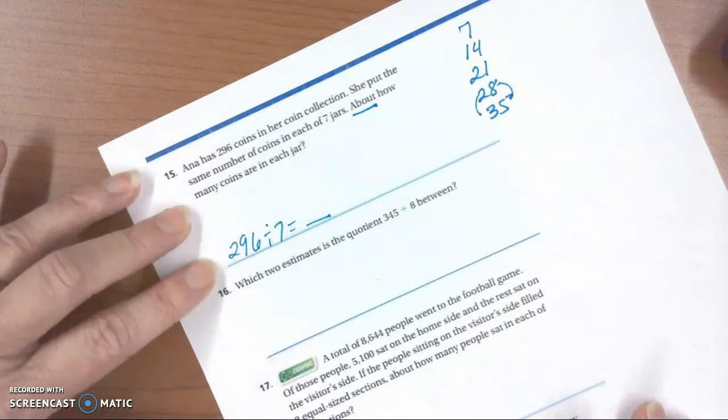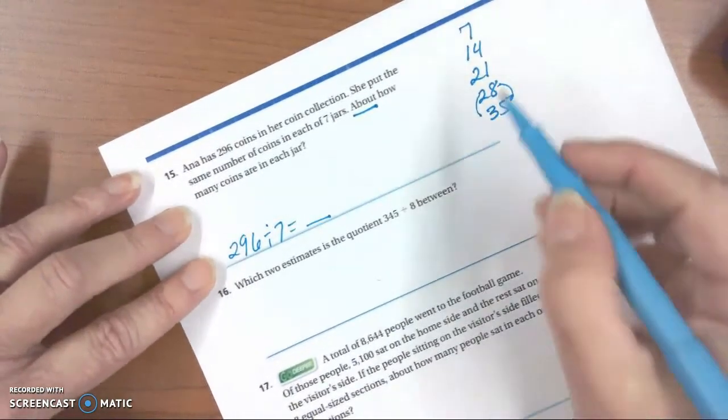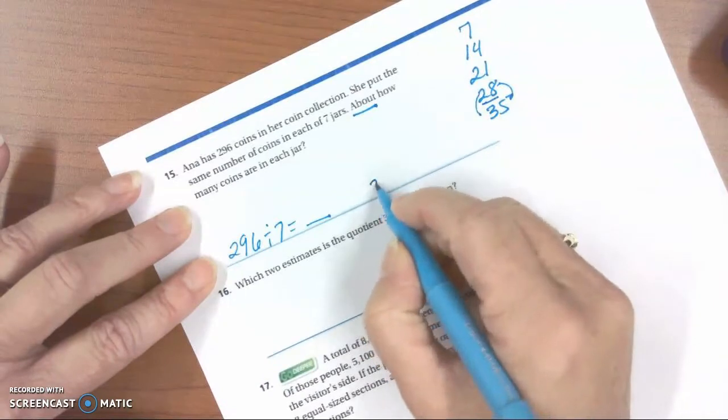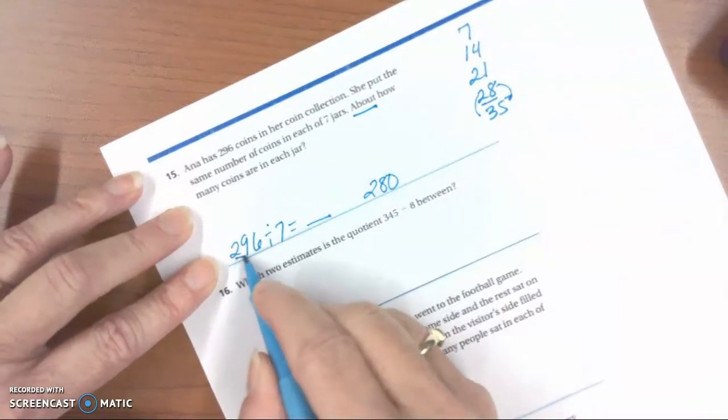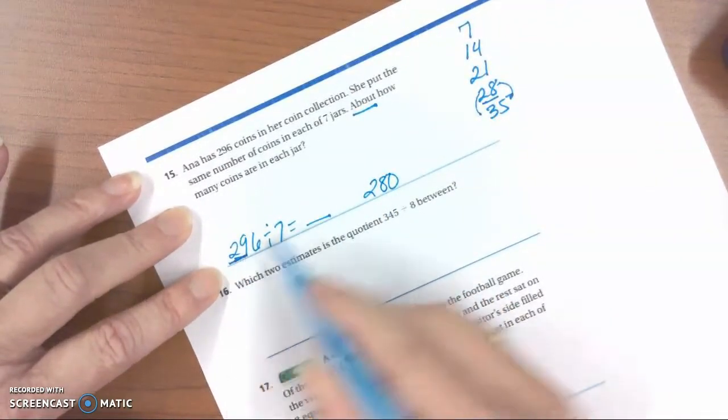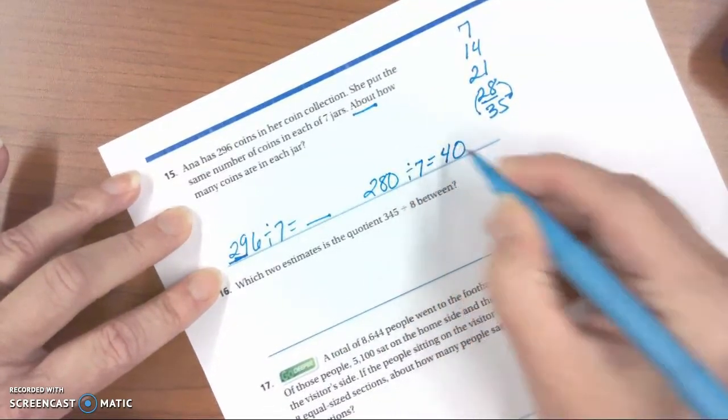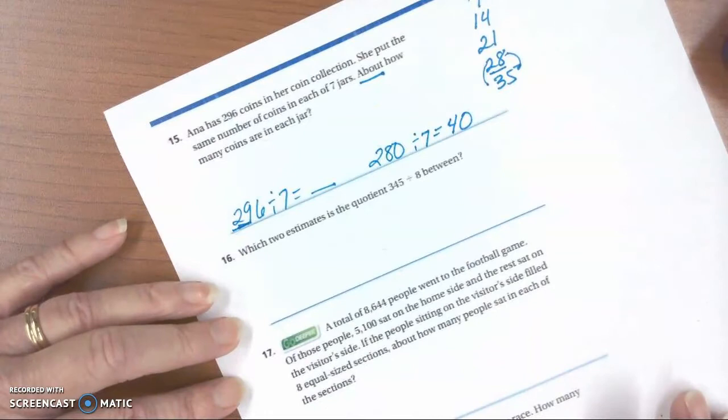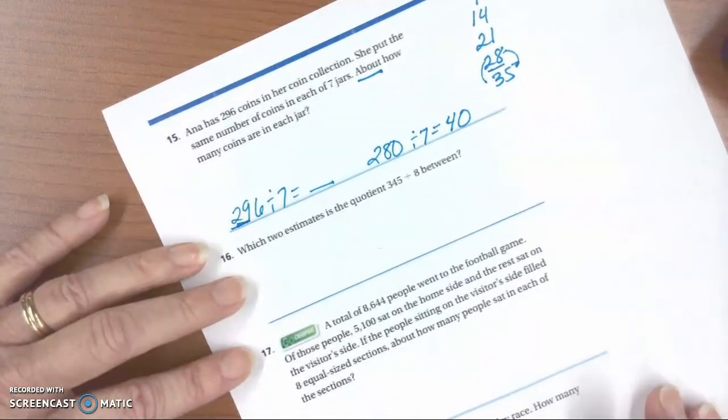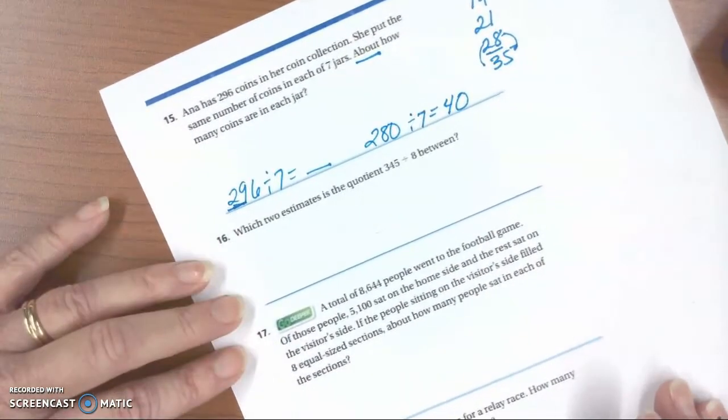So I'm going to go with underestimating, 280 because this is 29 hundreds. 280 divided by 7 is about 40. So there's my estimate. I could have gone with 350 divided by 7, which would be about 50. But either way,